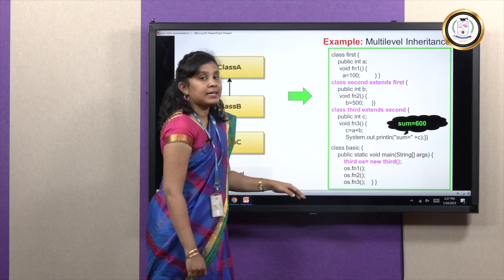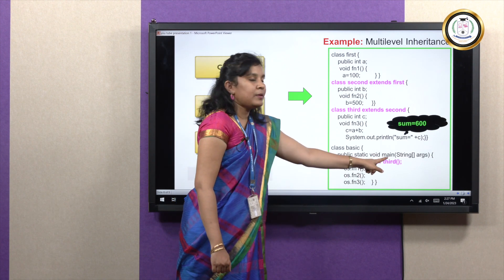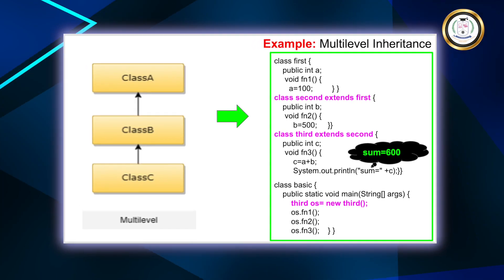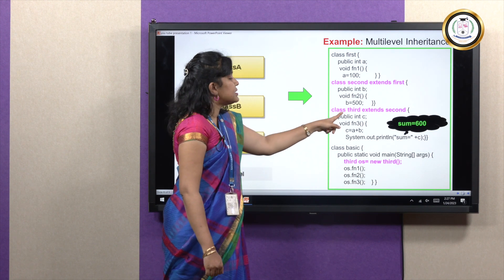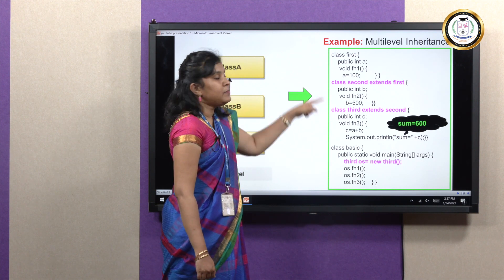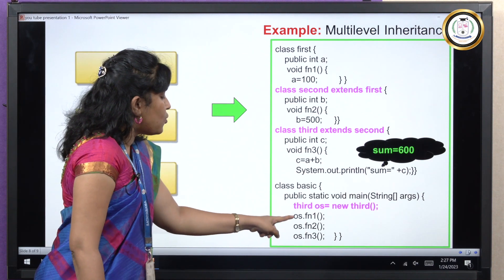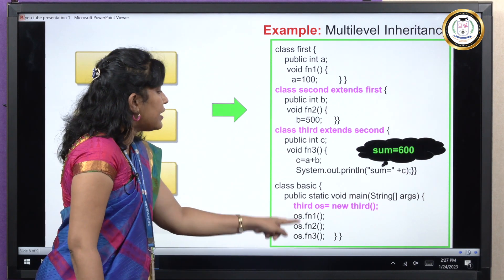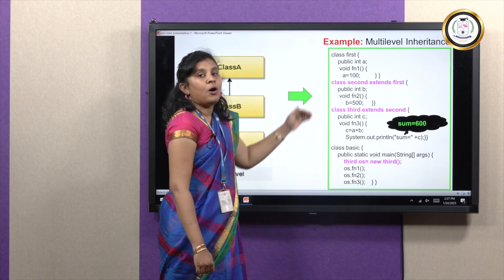A separate class contains the main function. I create an object only for the last derived class 'third'. Using that single object os, I can call os.fn1(), os.fn2(), and os.fn3() — accessing functions from all three levels. This demonstrates how with one object for the final derived class, the properties of all parent classes are accessible.